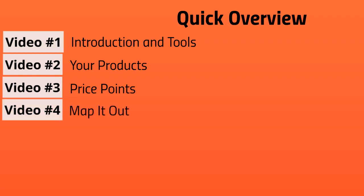In video number four, we're going to show you how to map things out so you have a step-by-step blueprint or plan, and you know exactly what to do and how to activate your plan. When you run into roadblocks, you'll know exactly what's ahead of you and it'll be easier to move forward. A lot of times people don't have a map or flowchart, so they jump right in and don't know what to do next. We want you to learn this system, implement it fast, and be successful.